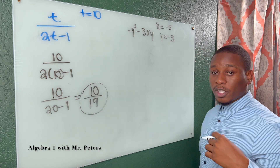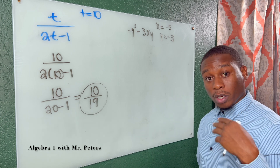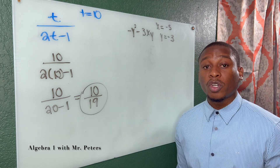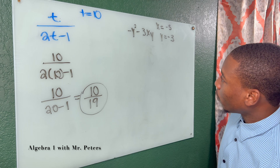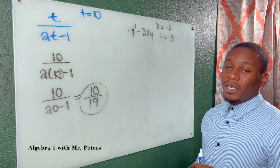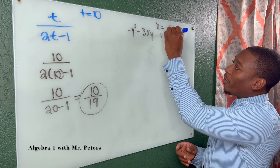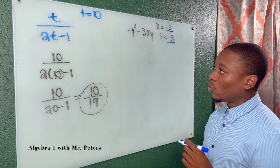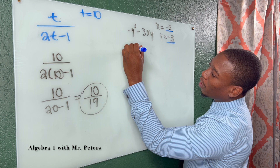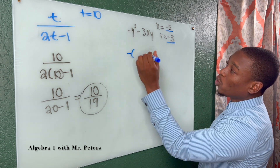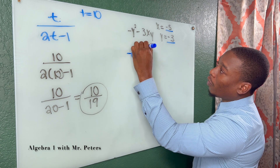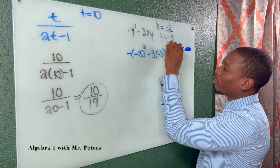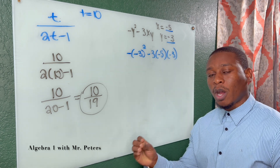When evaluating expressions, there are two steps: one, plug in the number value for the variable, and two, simplify to lowest terms. In this next problem, when you have negative values, always put parentheses around them because you can make a sign mistake. This says the opposite of y squared, where y is negative 3, minus 3 times x, which is negative 5, times y, which is negative 3.